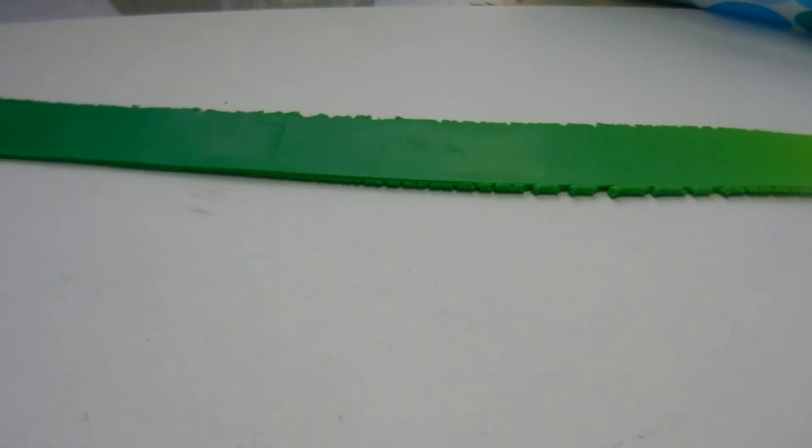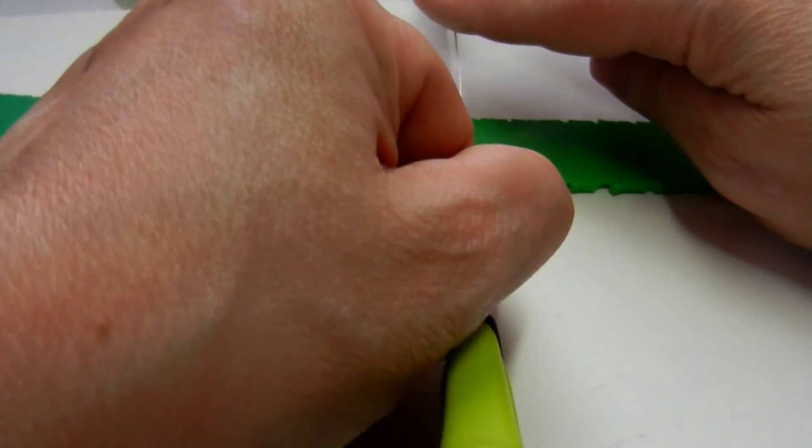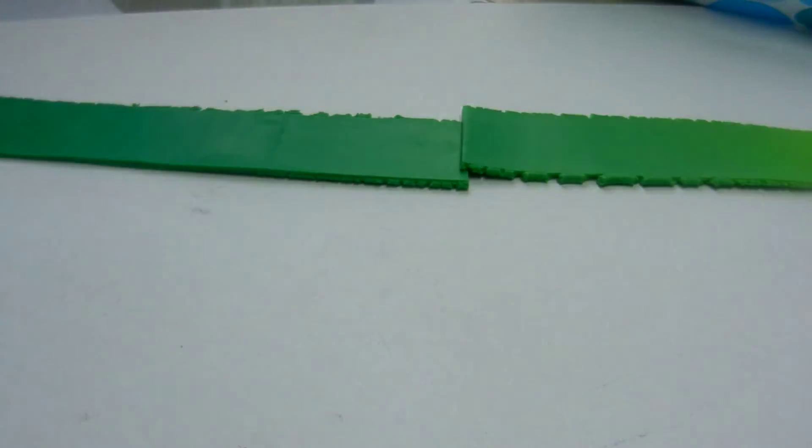What you're going to do at this stage of the game, because it's a pain in the neck to try to get it through the pasta machine, is you're going to handy dandily cut it. That's right, cut it in half.